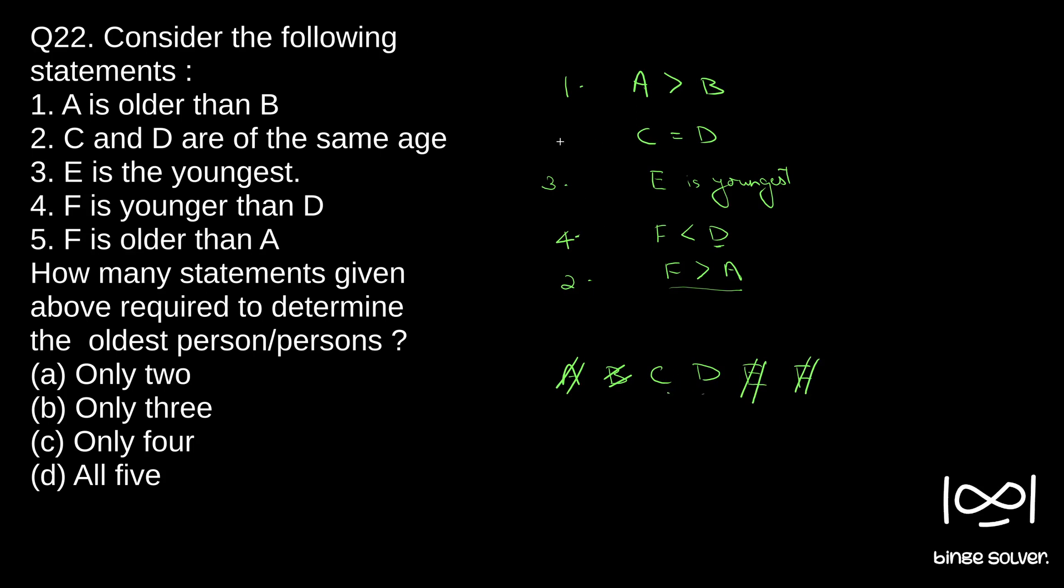We will have to use this statement to exactly know that C equals D. Among all these people, C and D are the oldest people and they are equally old. It is asking oldest person or persons, so persons. Here C and D are the oldest persons. We will have to use all five statements to get to this point. So our answer will be D, all five. The solution to question 22 is D, all five.